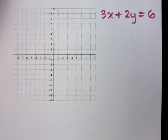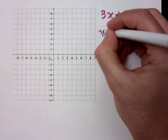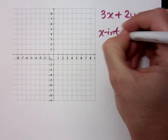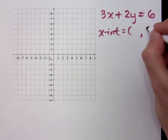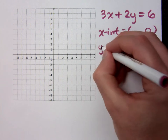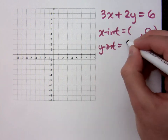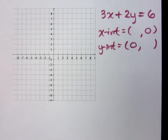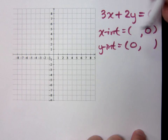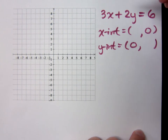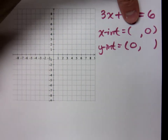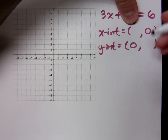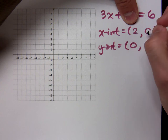What do you already know about your X-intercept? Y is 0. What do you know about your Y-intercept? X is 0. Since you know for the X-intercept that Y is 0, I can just cover this term up. When I cover that up, I see that 3X equals 6, so X has to equal 2.